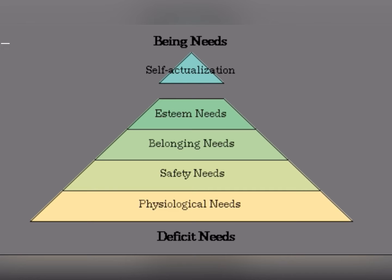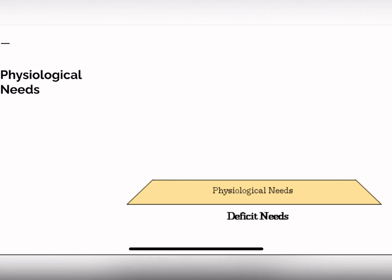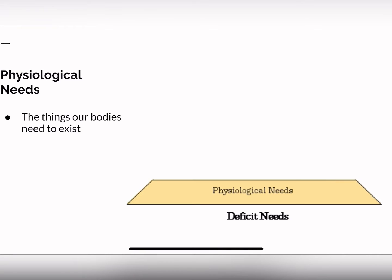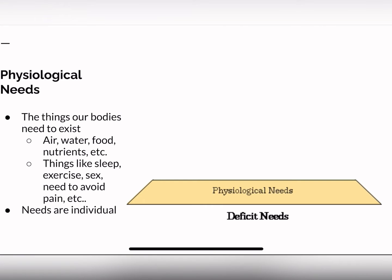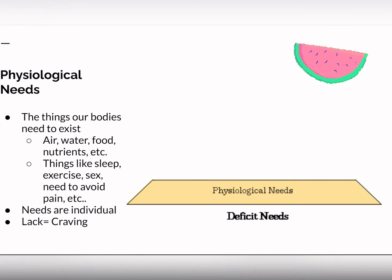Here's a pyramid showing all of them. First, we have our physiological needs, which is the base of our pyramid. These are things our body needs to exist, like food, air, water, and nutrients. Also things like sleep, exercise, sex, the need to avoid pain, and the need to avoid danger. These needs are very individualized depending on person-to-person, and a lack of a certain need leads to a craving. For example, if you're lacking vitamin C, you might crave orange juice.